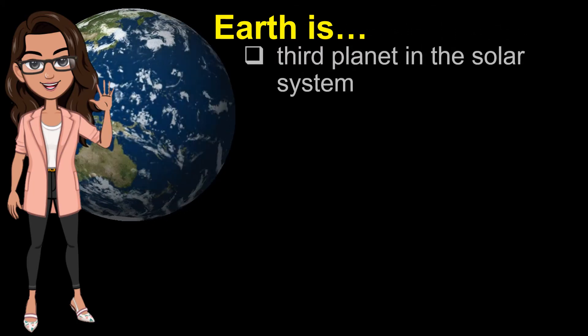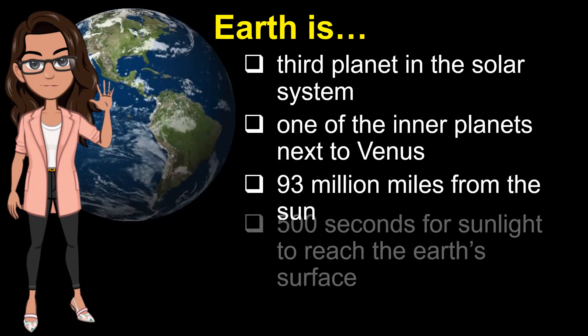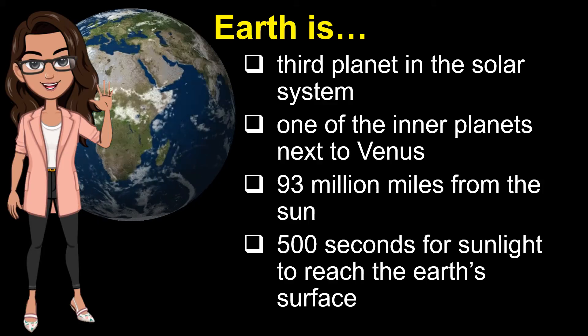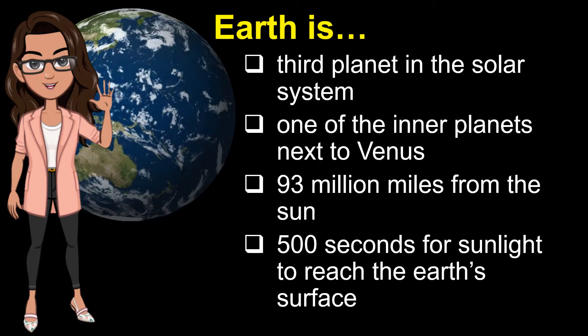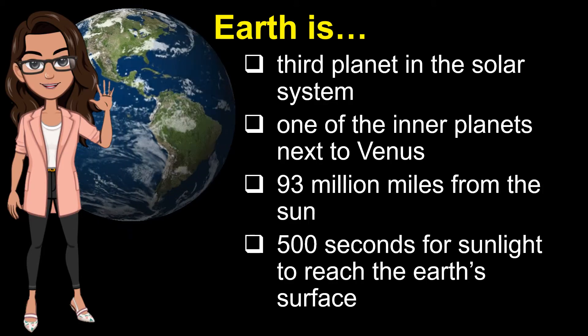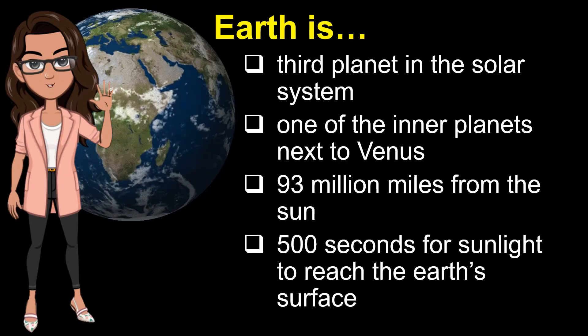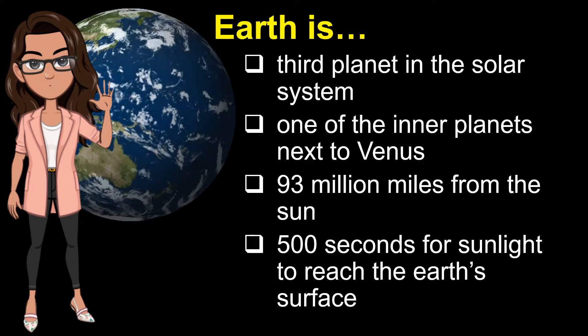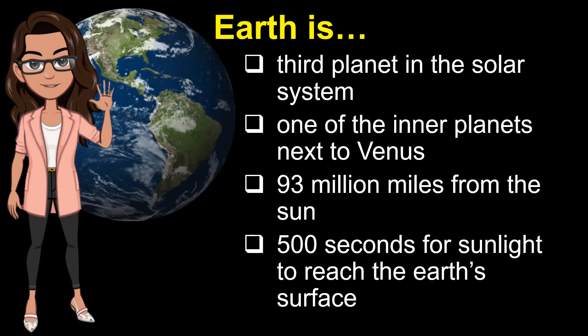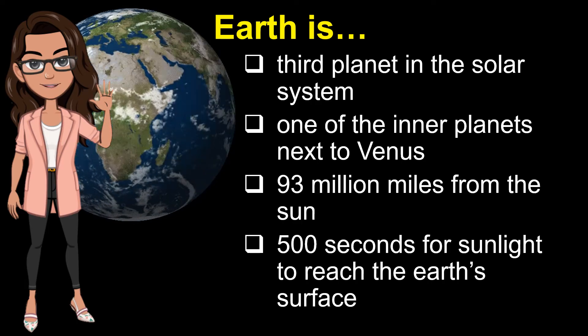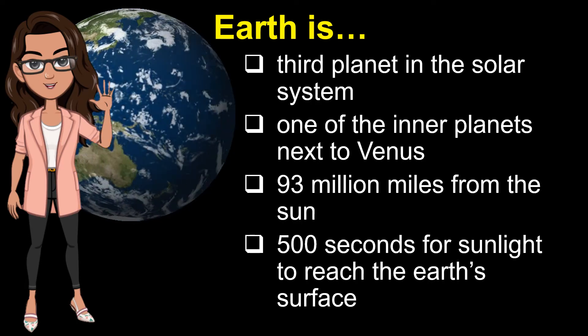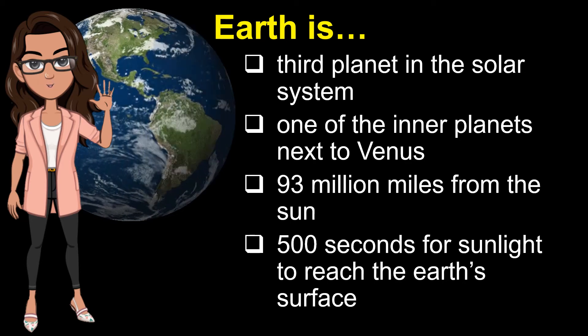Earth is the third planet in the solar system. It is considered to be one of the inner planets next to Venus. Its distance from the sun is about 93 million miles and it takes about 500 seconds for sunlight to reach the Earth's surface. This distance from the sun is enough to support life.